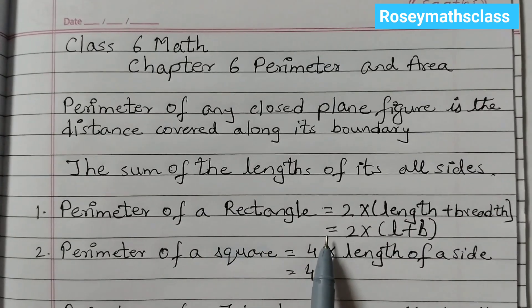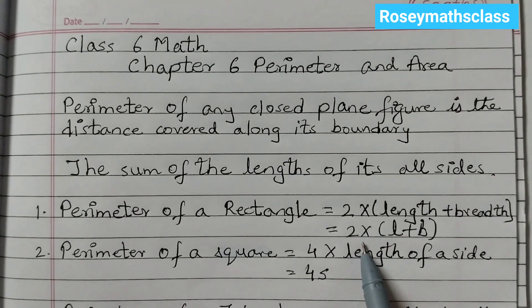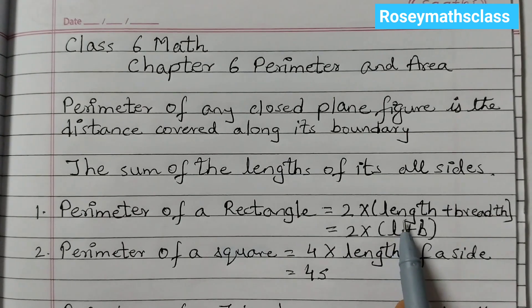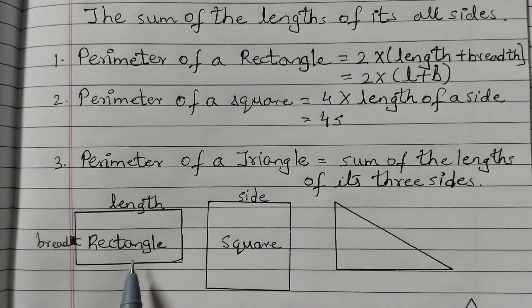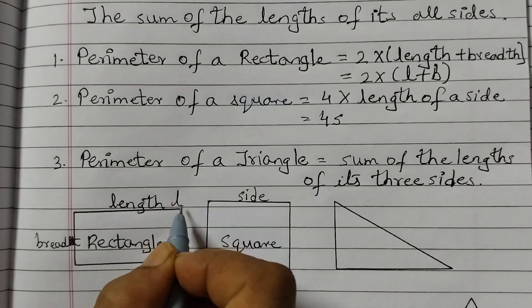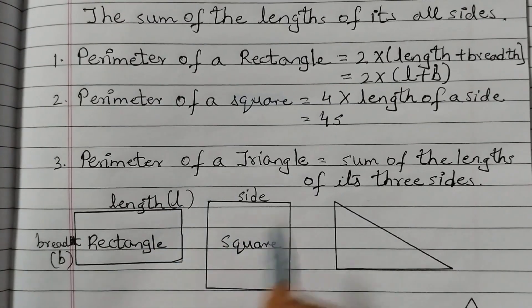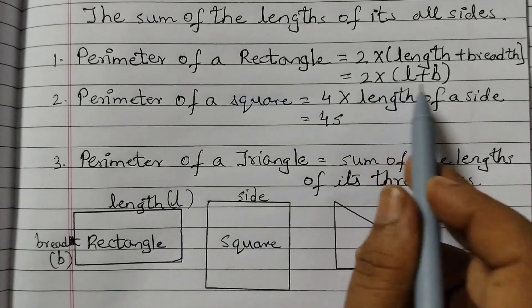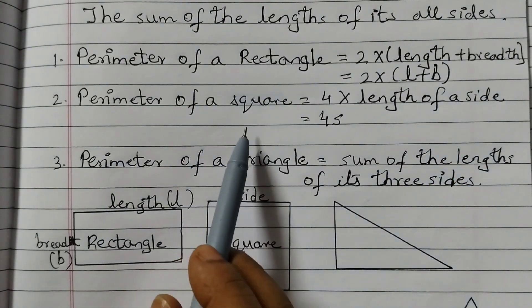The perimeter of a rectangle is equal to 2 into (length plus breadth), or we can write 2(L + B), where L is for length and B is for breadth. Here you can see a rectangle — this is the length L and this is the breadth B.